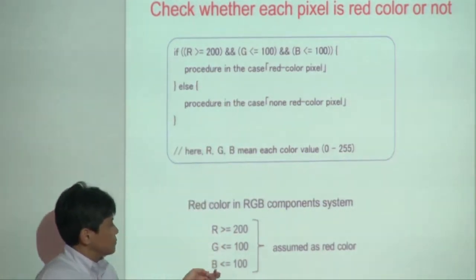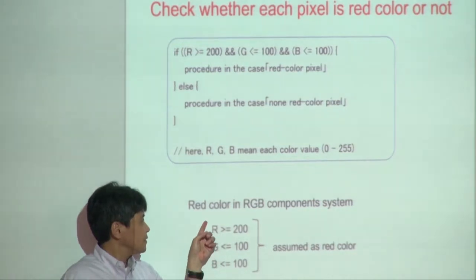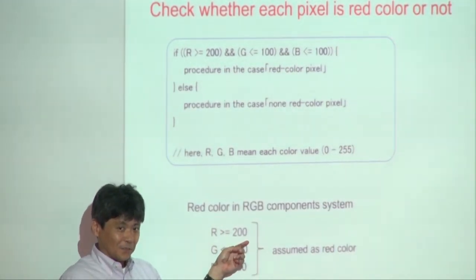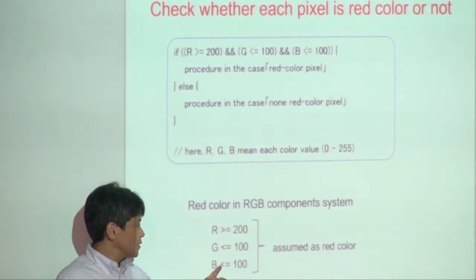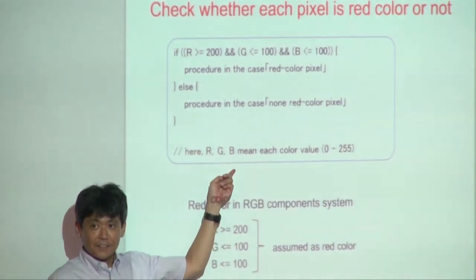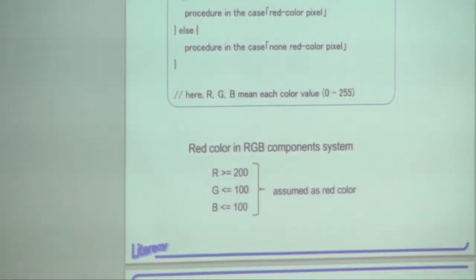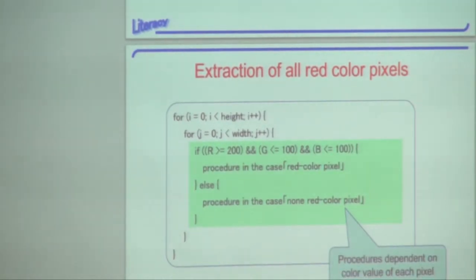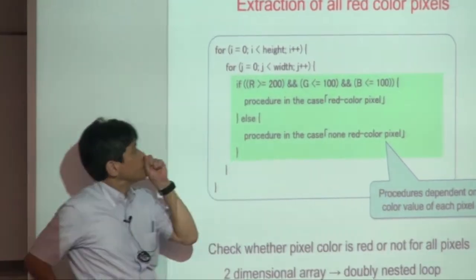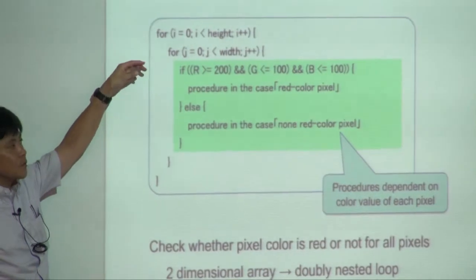This is just a definition of 'red' used by this program: if the red value is equal to or greater than 200, and the green and blue values are equal to or less than 100, such a pixel is treated as red. The image file consists of several pixels, so you have to use for-loops to check each pixel, specifically nested for-loops.